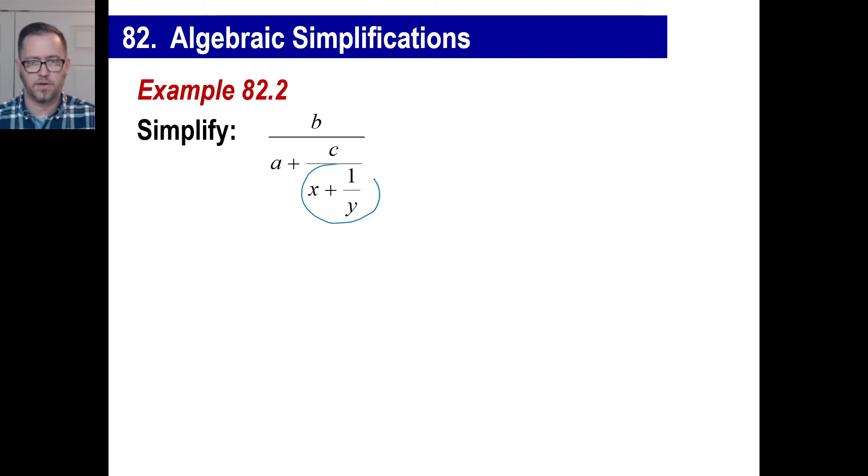Once again, we'll start down here. And probably you can do this in your head. We have y as our common denominator. That'll be x, y over y. So our new fraction becomes, I'm just going to do this little part at a time. So we have c over x, y plus 1 over y, which of course means we're going to flip this and multiply. So we have c, y over x, y plus 1. All right.